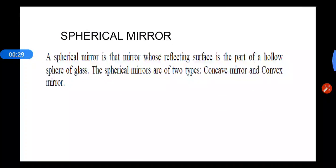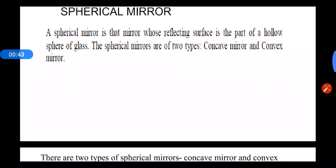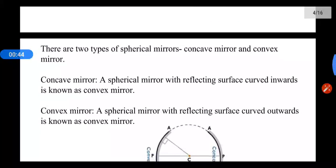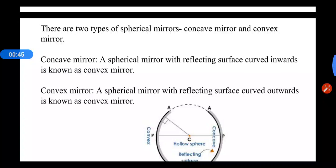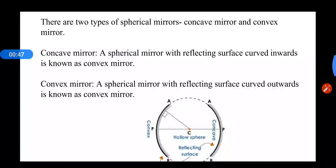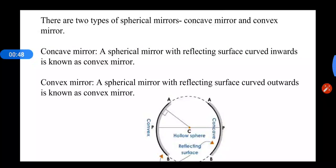Spherical mirror. What is a spherical mirror? A spherical mirror is that mirror whose reflecting surface is the part of a hollow sphere of glass. The spherical mirrors are of two types: concave mirror and convex mirror.